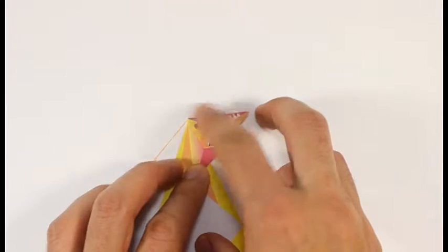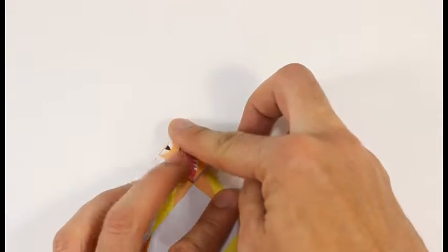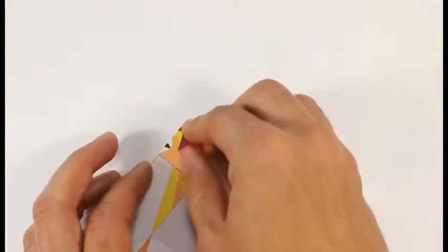Then crease in the other direction. Open it up and press the top corner down to the bottom corners to form a square.